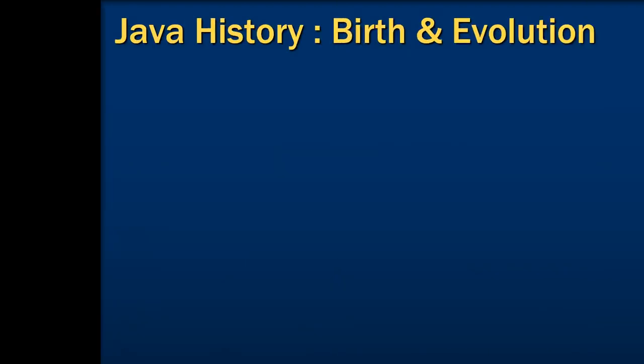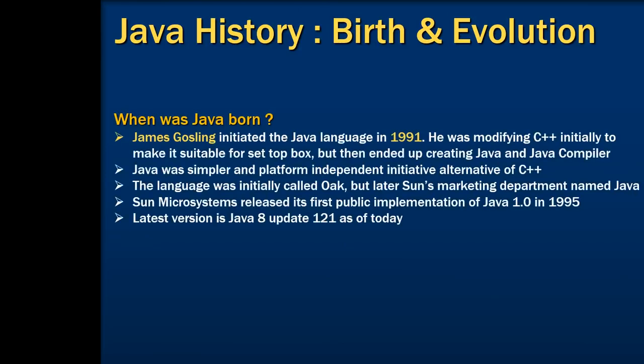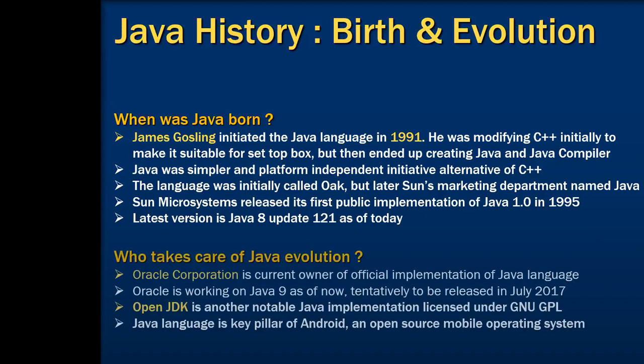Now let's talk about how Java came into place and how it evolved. Java was a simpler and platform independent alternative to C++. It was initially developed by James Gosling when he was modifying C++ code to make it suitable for the set-top box. The language was initially called Oak — interestingly because there was an oak tree in front of the developer's window — but later Sun's marketing department named it Java. Sun Microsystems released the first public implementation of Java 1.2 in 1995. The latest stable version is Java 8 Update 121. Oracle Corporation is currently the owner of Java, and it is working on Java 9 which will be released in July 2017.